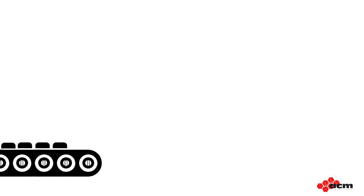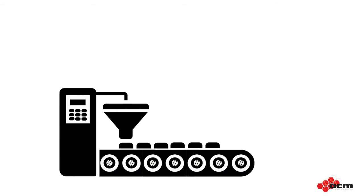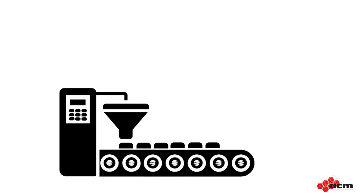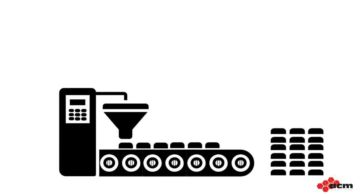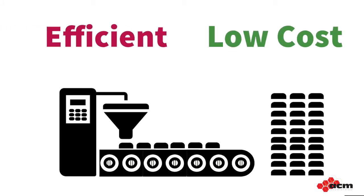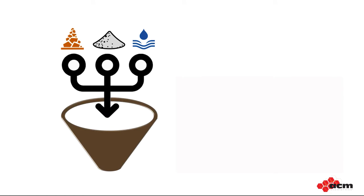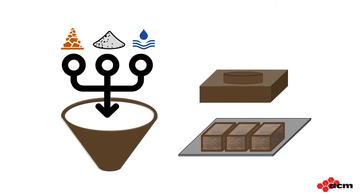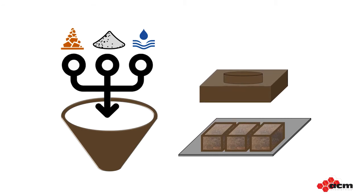At its core, the dry cast manufactured concrete products business is based on efficiency and volume. We want to make high quality concrete products at the lowest cost and in the least amount of time. We need to make a mixture of cement, water and aggregates that is able to fill a mold and hold its shape immediately after compaction, when the mold is removed. This entire process takes seconds, as opposed to days required for wet cast concrete.